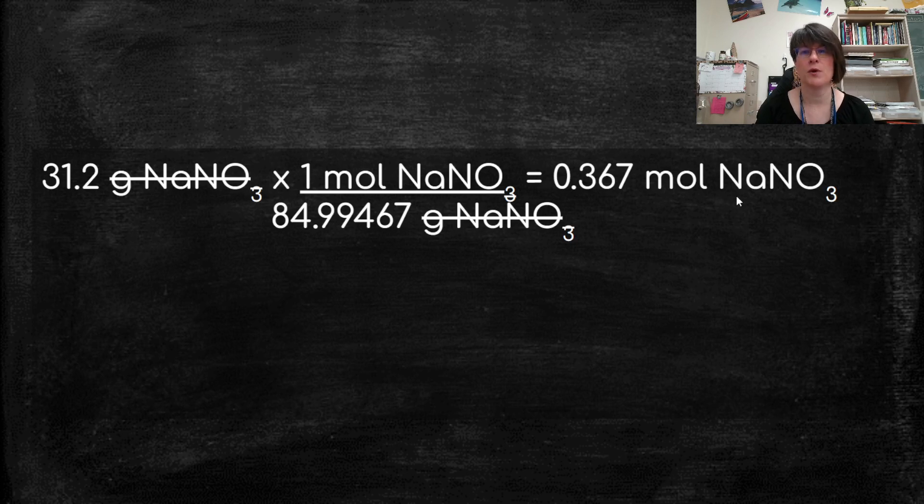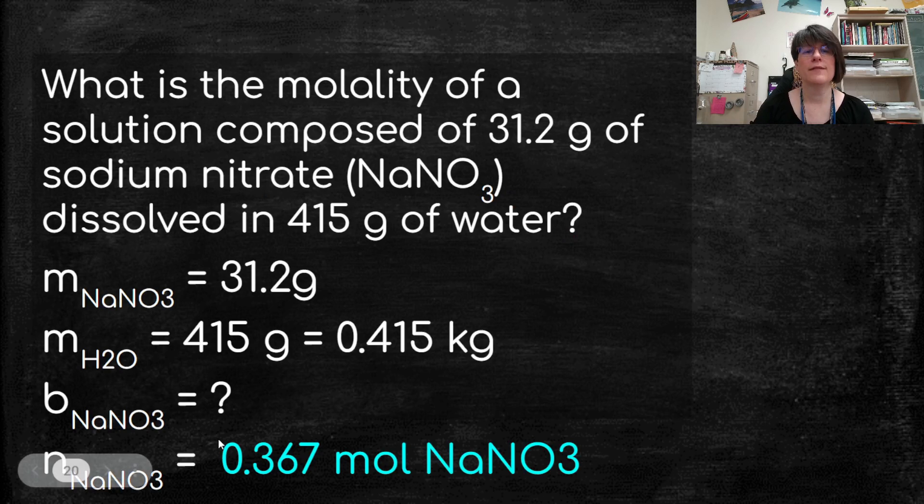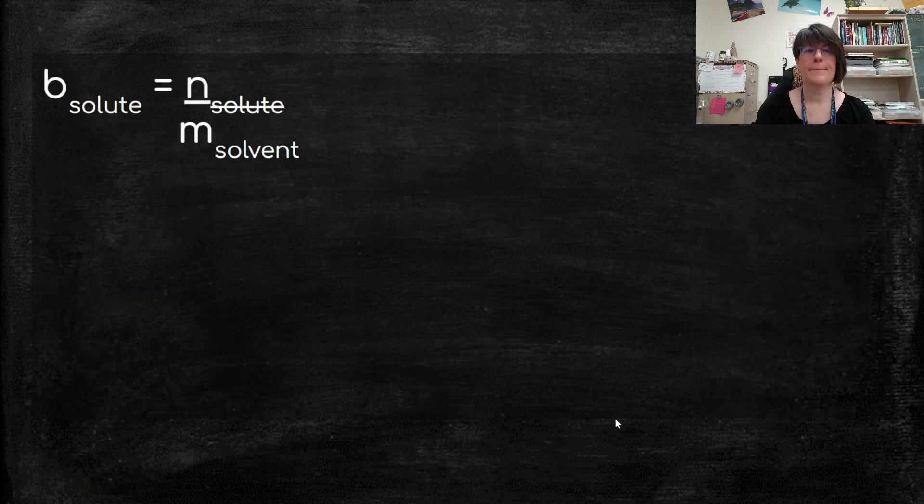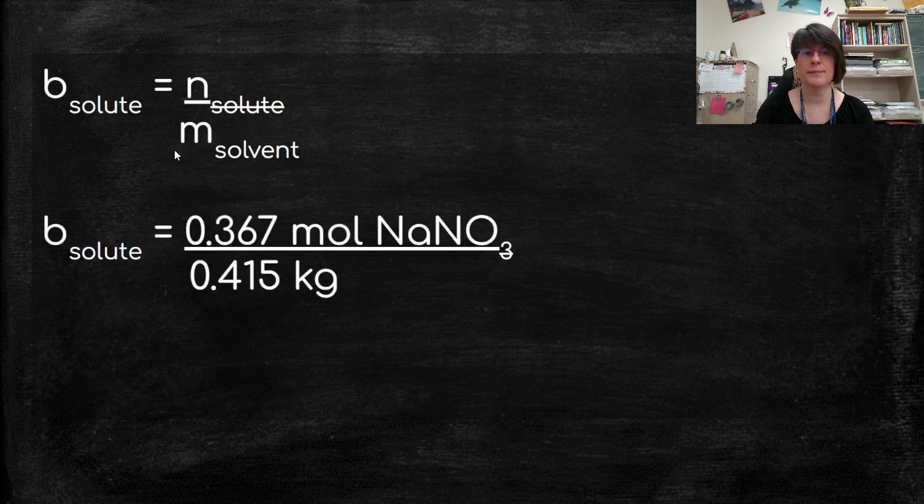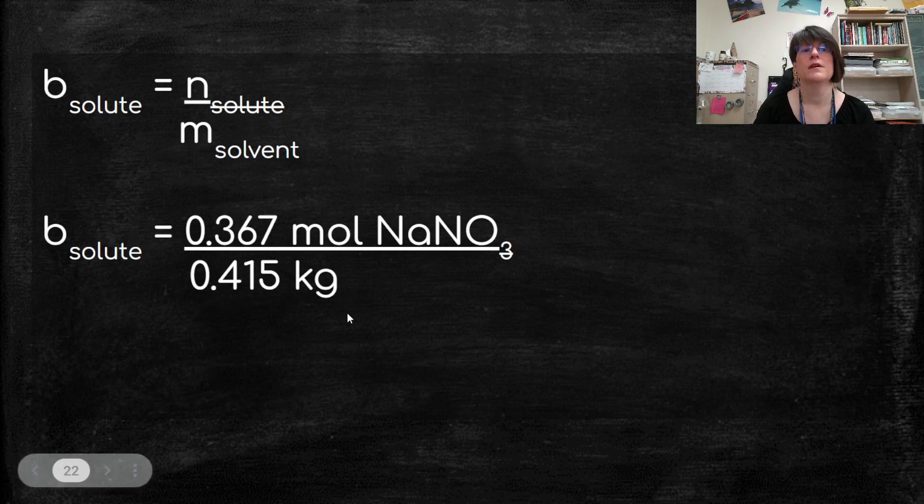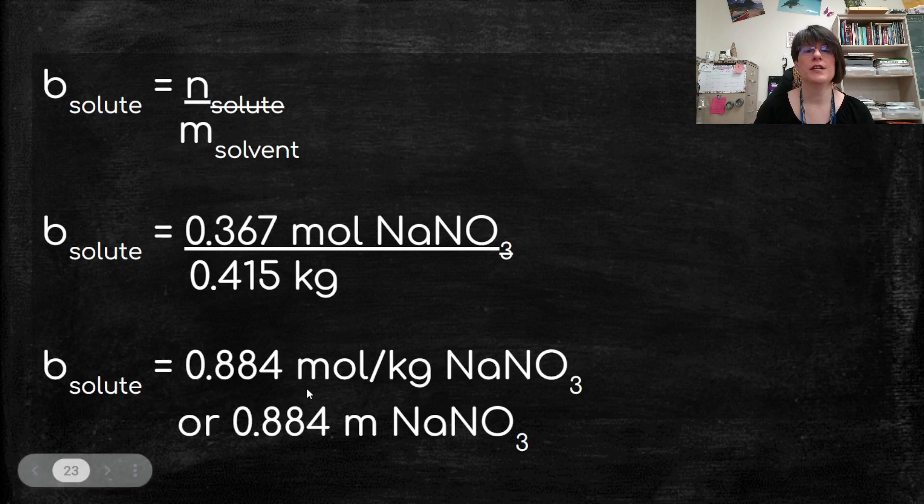So now I can figure out the molality. So now I have that number. So I'll put that in. So I start out with my equation. Molality of the solute is the number of moles of the solute over the mass of the solute. So plugging my numbers in, I have 0.367 moles of sodium nitrate and 0.415 kilograms of water.